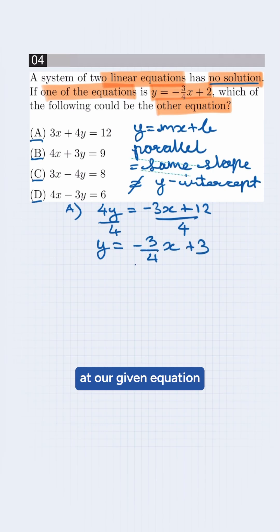Here, slope is the same as our given equation, but has different y-intercept. This means it has no solution, so our correct option will be A.